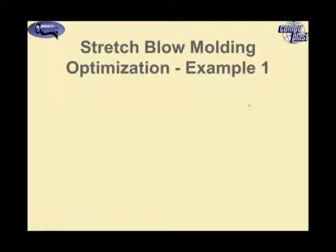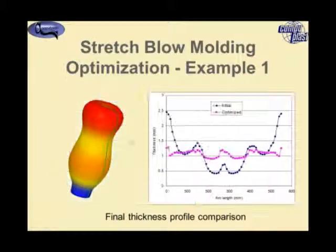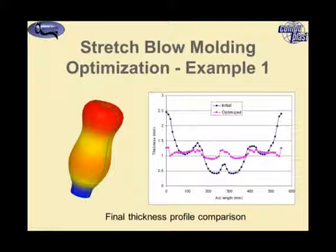Looking at the thickness profile along a line around the bottle, this graph shows that the initial uniform preform resulted in a rather large thickness variation — anywhere from 0.5 millimeters to about 2.5 millimeters. By optimizing the preform thickness profile, you can achieve a much more uniform thickness distribution throughout the part, of just a little over about 1.3 millimeters.